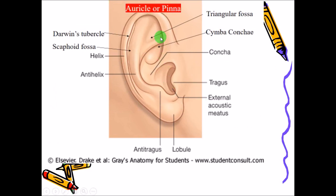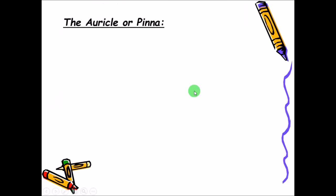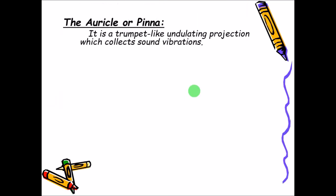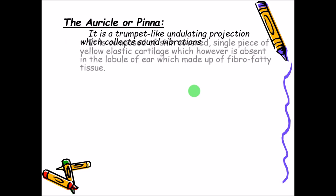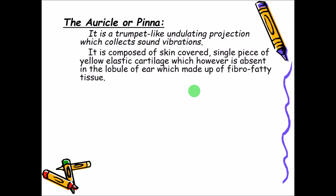The auricle, also called the pinna, leads deep inside to the external acoustic meatus. The pinna has the tragus, the anti-tragus, the lobule, the helix and the anti-helix, scaphoid fossa, and on the helix you can see a tubercle called Darwin's tubercle, then the triangular fossa, cymba, and the concha. The auricle is trumpet-shaped, mainly for collection of sound waves, and is a single piece of yellow elastic cartilage.